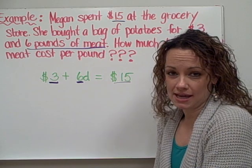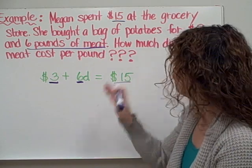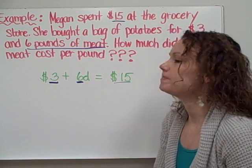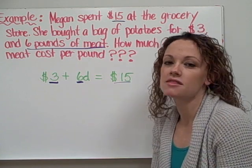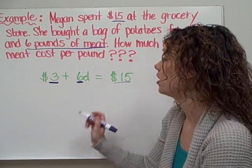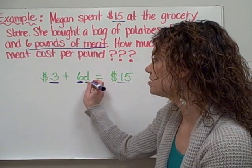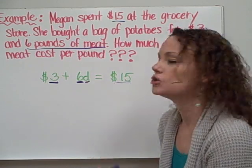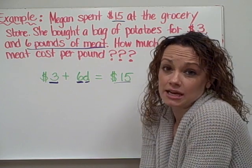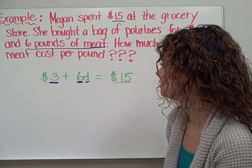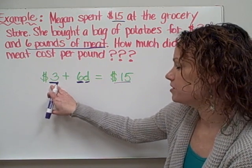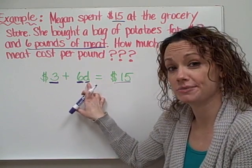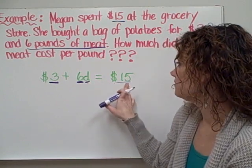What I don't know is how much the meat costs per pound — that's the final question. If I'm figuring out the cost per pound, I'd be multiplying the price of the meat by how many pounds I bought. So I chose to represent the cost of meat with the letter D, standing for dollars. You can choose any letter you want when creating your own algebraic expressions or equations.